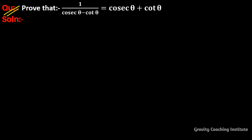Question: Prove that 1/(cosec θ - cot θ) = cosec θ + cot θ.